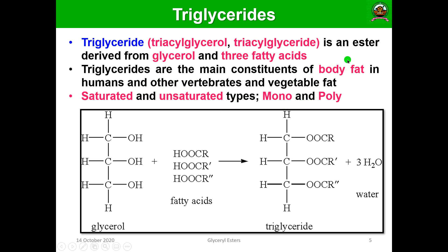Unsaturated fatty acids in triglycerides are of two types: monounsaturated fatty acids, which have only one double bond, and polyunsaturated fatty acids (PUFA), which have many double bonds. In the structure, glycerol reacts with three molecules of fatty acid (designated R, R', R'') — the hydroxyl groups interact, water molecules are removed, and ester linkages (COO) are formed, producing triglycerides and three molecules of water.